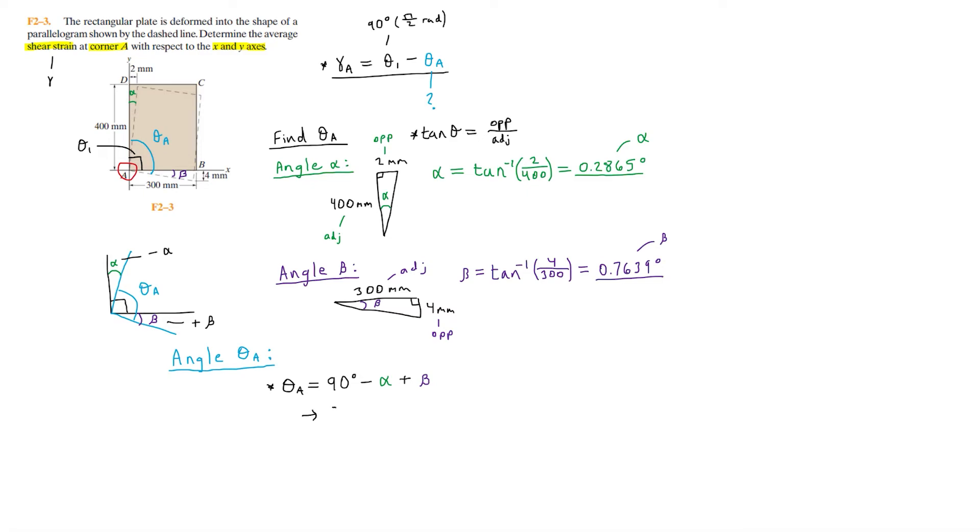Plugging in the values, we have 90 degrees minus 0.2865 degrees plus 0.7639 degrees. Adding these values up, theta A equals roughly 90.477 degrees.